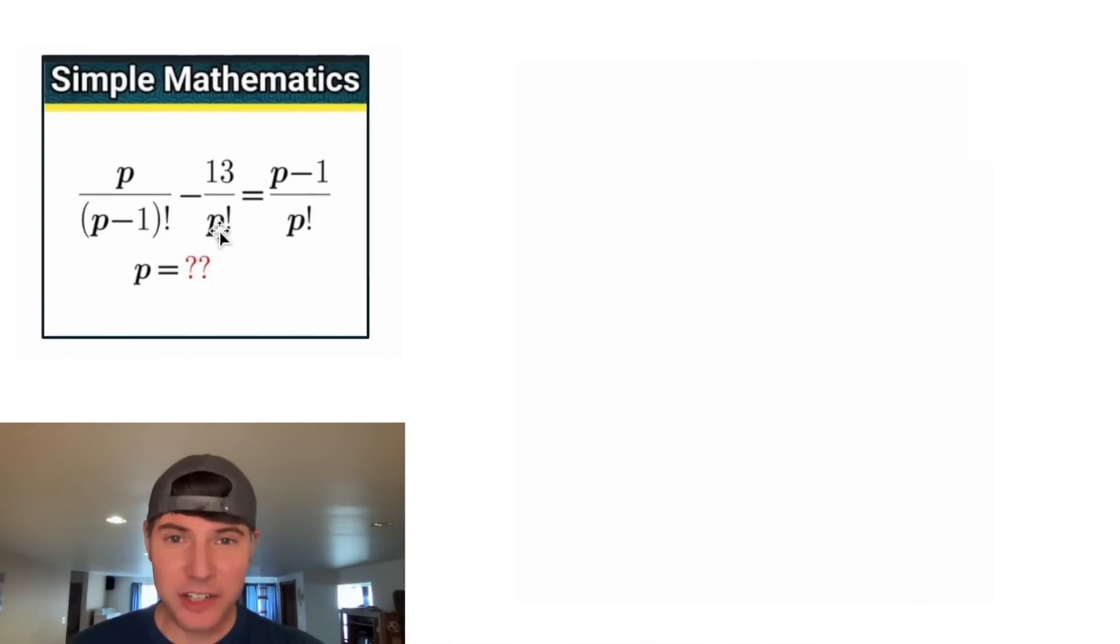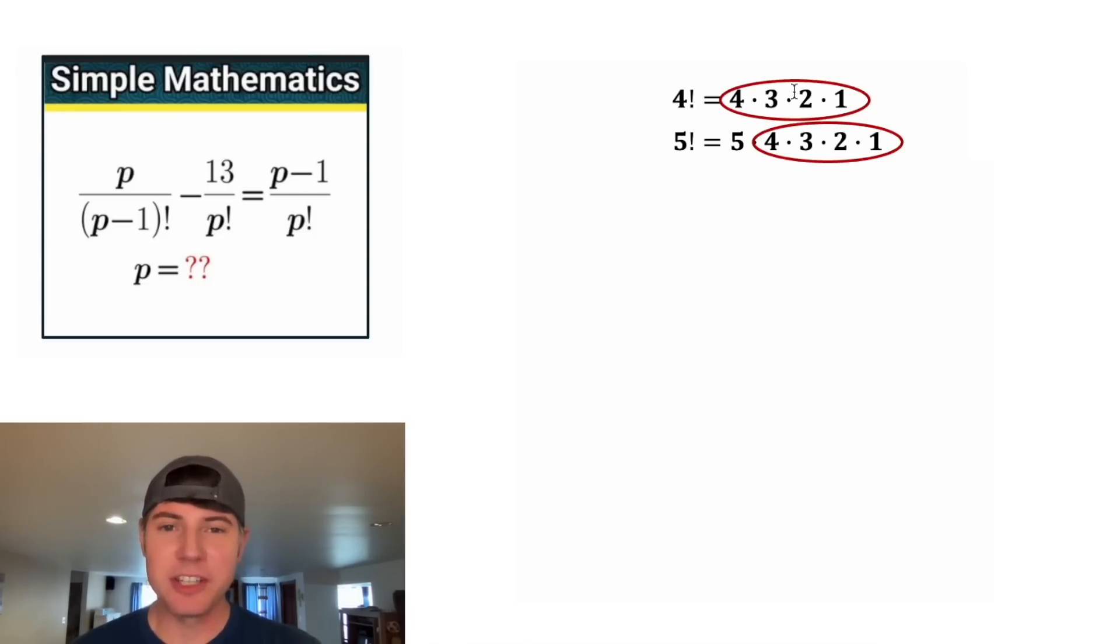So the first thing to stick out are these factorials. They look like exclamation marks. Ultimately, what it means is something like four factorial means four times three times two times one, or five factorial would be five times four times three times two times one. And one of the fun things about factorials is you'll notice these two things match. So that means we can copy down the five factorial, but in the place of this four times three times two times one, we can plug in a four factorial. So five factorial equals five times four factorial.